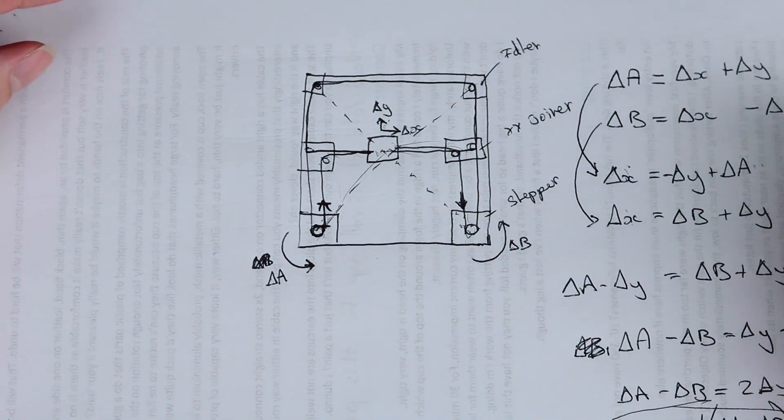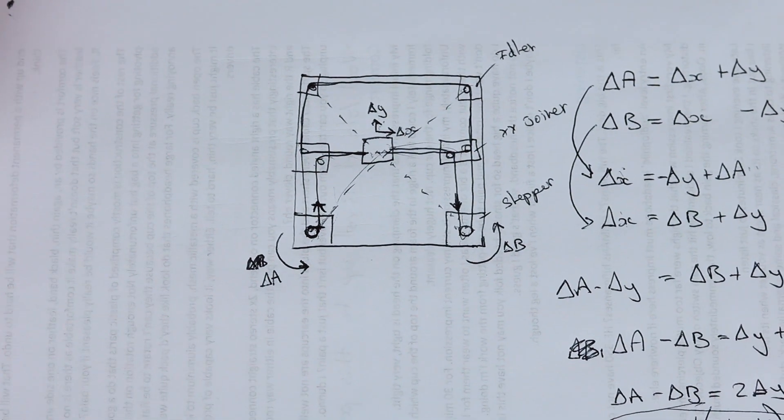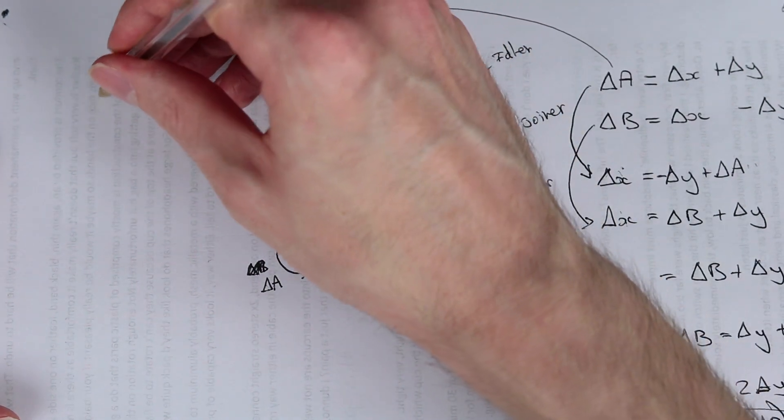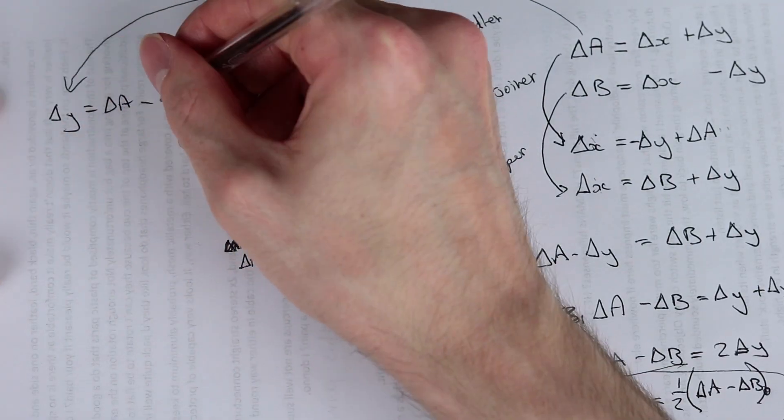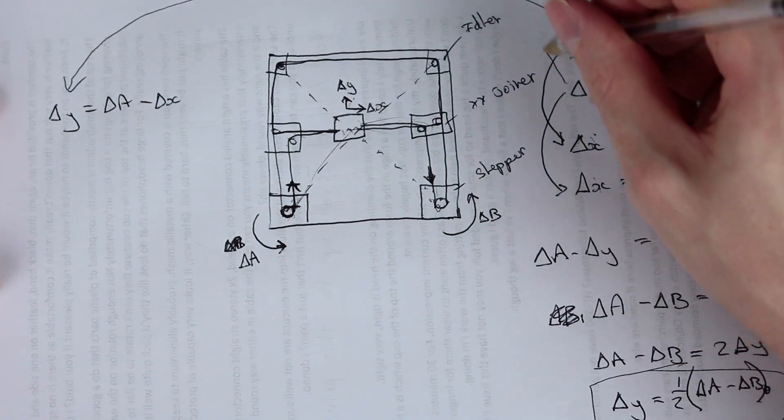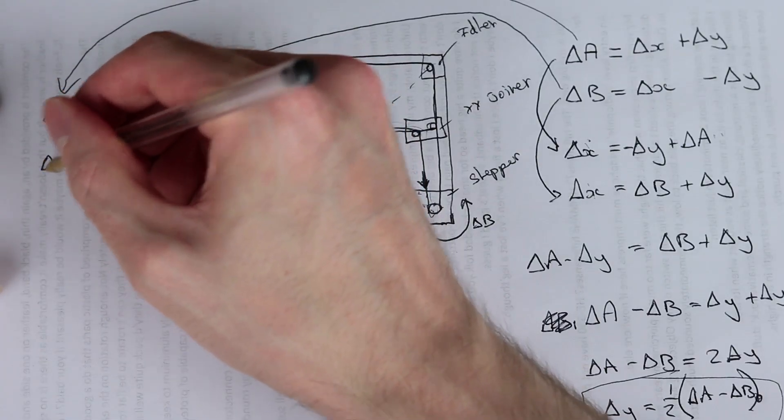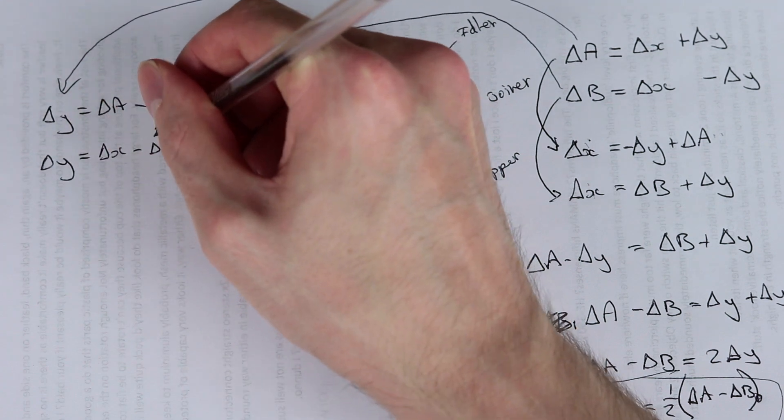What about delta X? Well, we need to do the same, but we need to remove delta Y. So this we can now make delta Y equals delta A minus delta X. And moving this one over, we have delta Y equals delta X minus delta B.